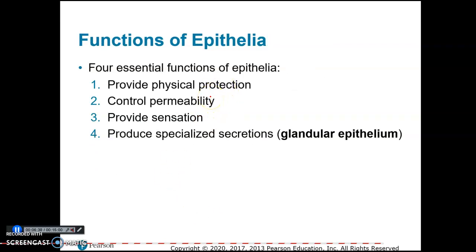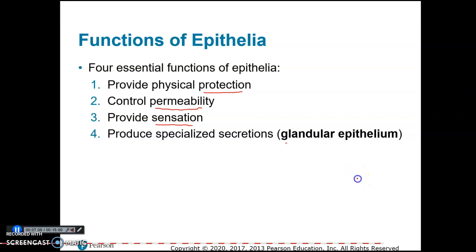The essential functions of epithelia are to provide physical protection — like the skin protecting the inside of our body — control permeability by controlling which materials can cross, provide sensation through sensory receptors located in epithelia especially in the skin, and produce specialized secretions from glands, such as sweat.